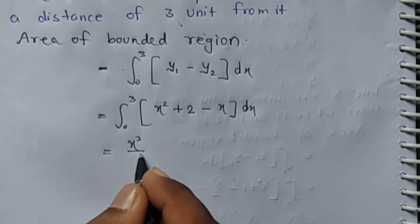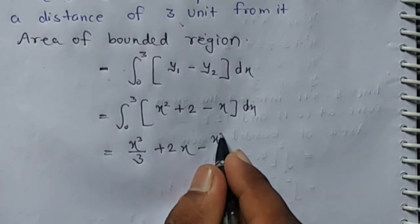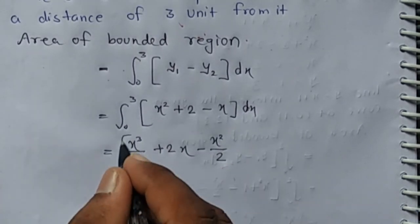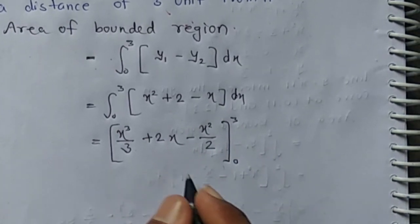x cubed by 3 plus 2x minus x squared by 2.